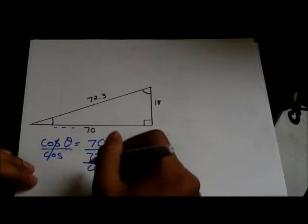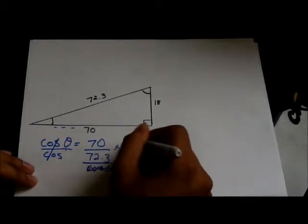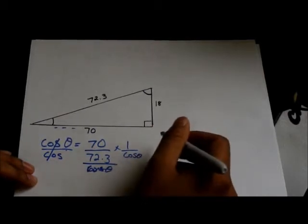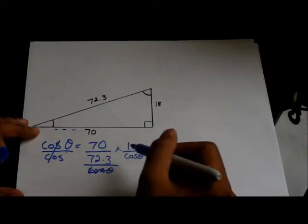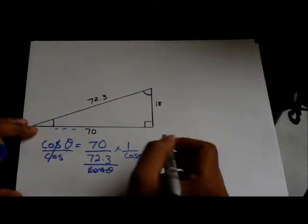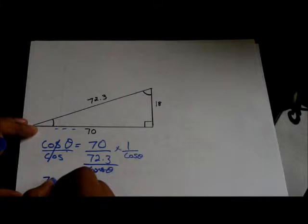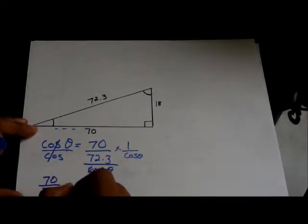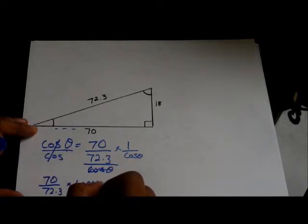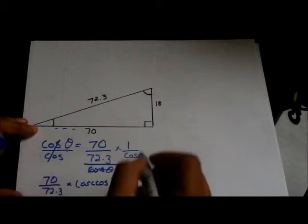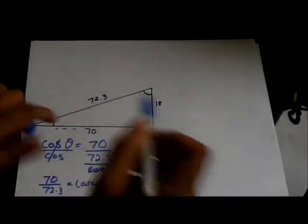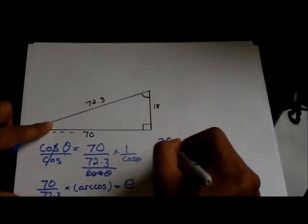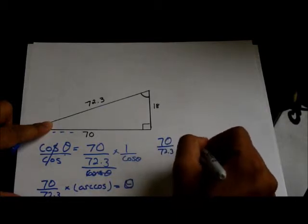This is writing this as basically times 1 over cos. 1 over cos is the inverse. We don't really write it like that. We call it the arc of that trigonometric function. So, it will be 70 over 72.3 multiplied by the inverse cos is equal to what we isolated as theta. On the calculator, it's written as 70 over 72.3 multiplied by cos to the negative 1.